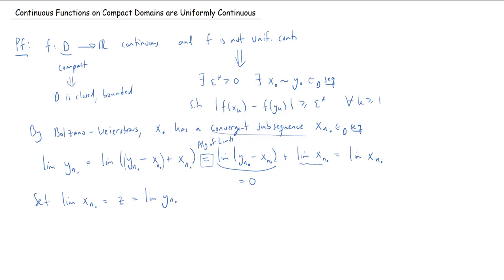Now we haven't used the fact that f is continuous yet. Since f is continuous on all of D, we need z to be in D. This is where compactness is again helpful: D is not only bounded but also closed, which means D contains all its limit points. Since xₙ· is a convergent D-sequence, its limit z must be in D. So f is continuous at z.